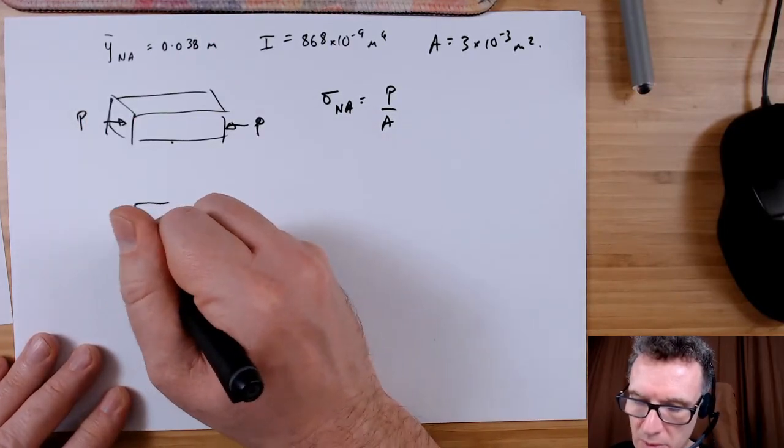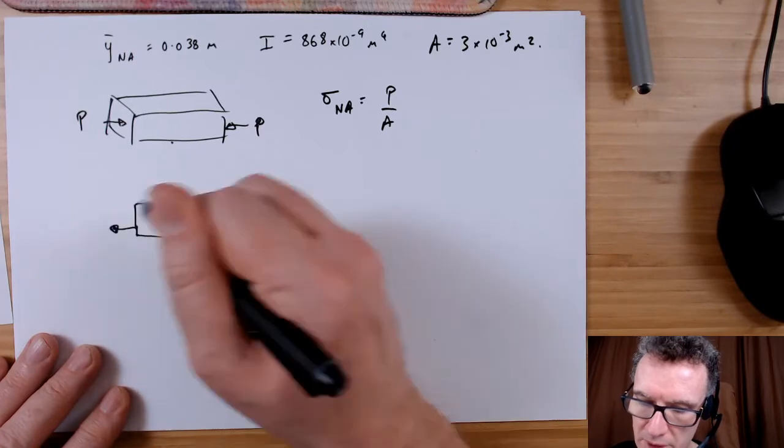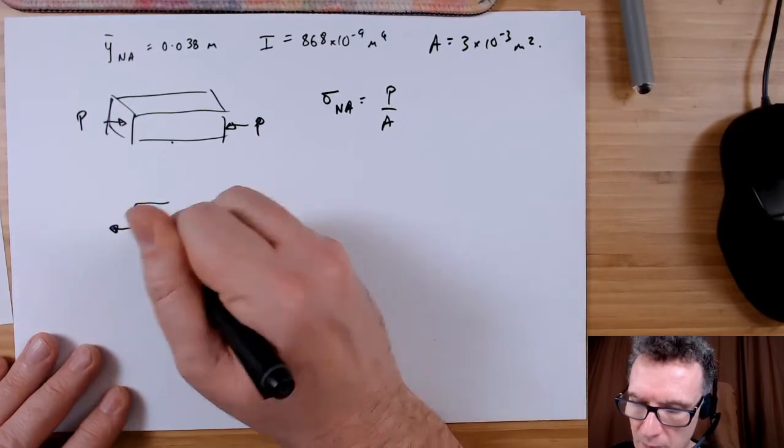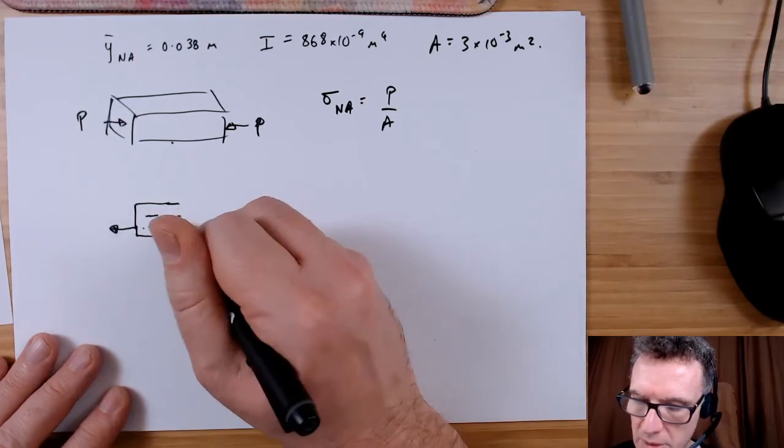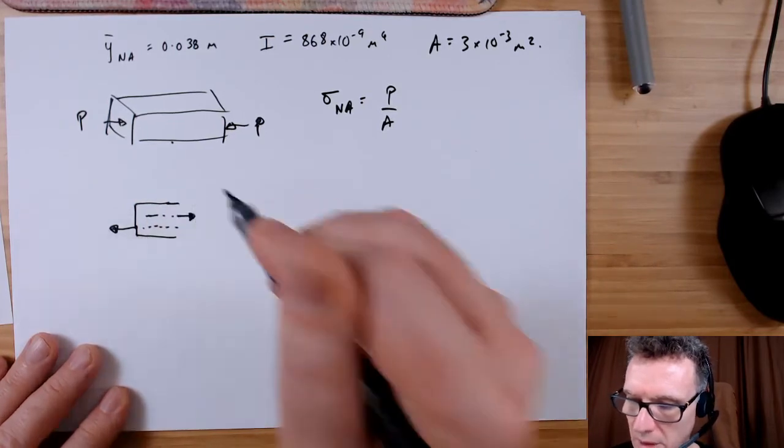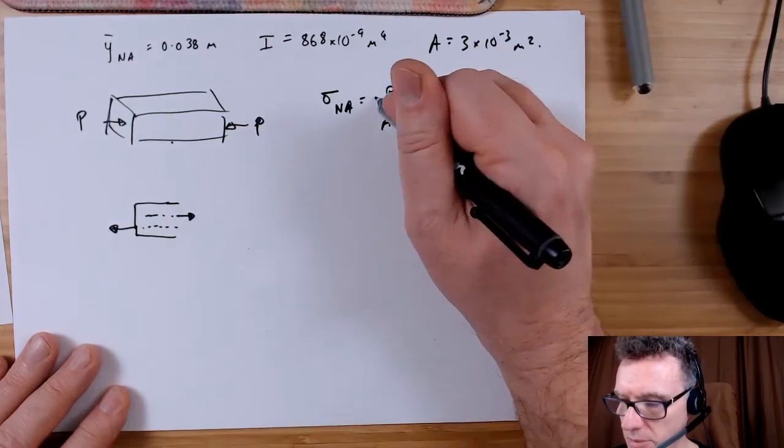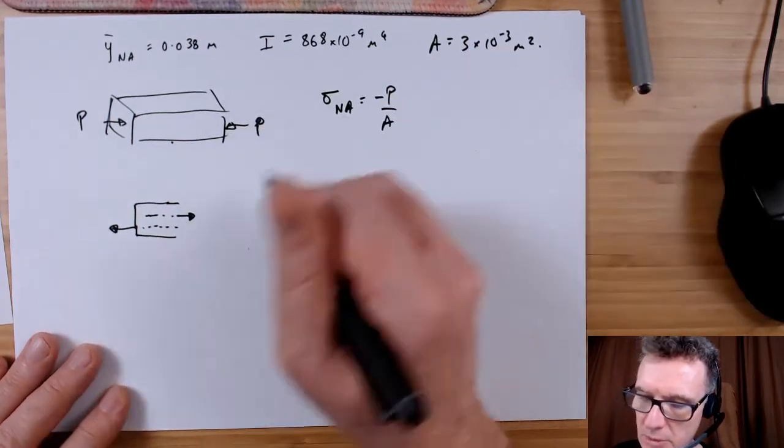Here we've got the neutral axis above it here and we will have a compressive stress, so this would be minus, so that will be the internal force happening there.